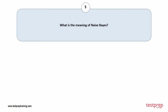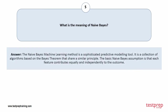Question number five: what is the meaning of Naive Bayes? The Naive Bayes machine learning method is a sophisticated predictive modeling tool. It is a collection of algorithms based on Bayes' theorem that share a similar principle. The basic Naive Bayes assumption is that each feature contributes equally and independently to the outcome.